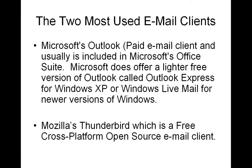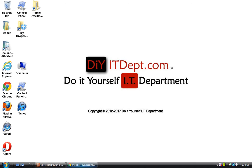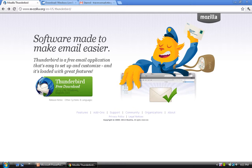The two most used email clients are Microsoft Outlook, which is a paid email client usually included in Microsoft's Office Suite. Microsoft also offers a lighter free version called Outlook Express for Windows XP, or Windows Live Mail for newer versions of Windows. The second biggest email client is Mozilla's Thunderbird, which is a free, cross-platform, open-source email client. We're going to show you how to look at both of them and download them.